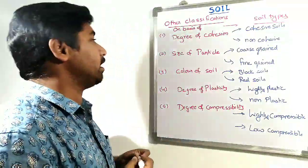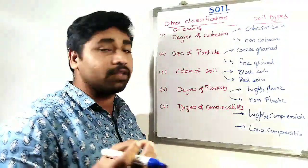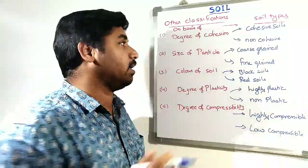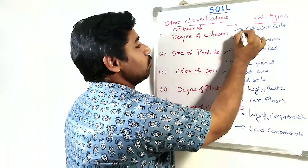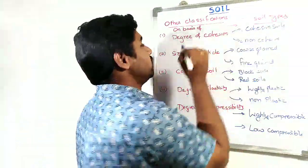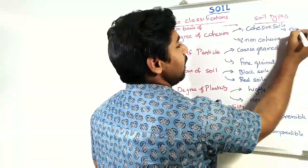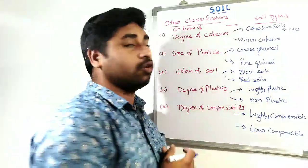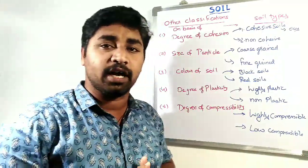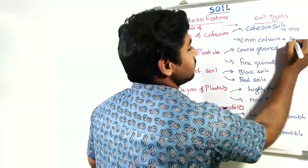First, classification on the basis of degree of cohesion. Based on the intensity of cohesive nature between soil particles, we can classify soil into two types: cohesive soil and non-cohesive soil. Cohesive soils have more cohesive nature — for example, clay. Non-cohesive soils have very little grain-to-grain cohesion — for example, sand.